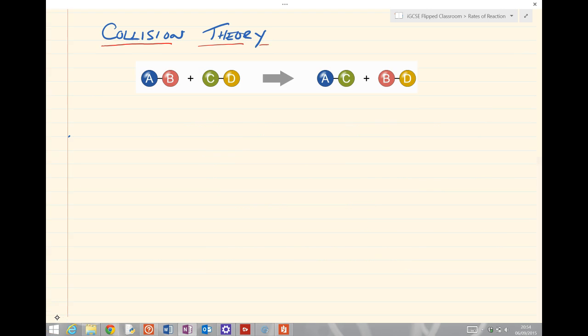This whole lesson is underpinned by collision theory. Let's first go back to our equations from the last lecture. We'll take this one where we've got AB plus CD going to make products AC and BD.